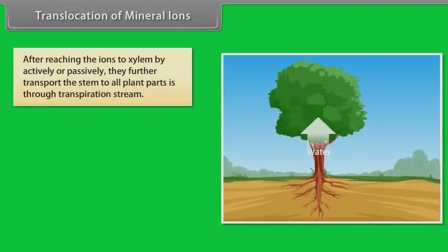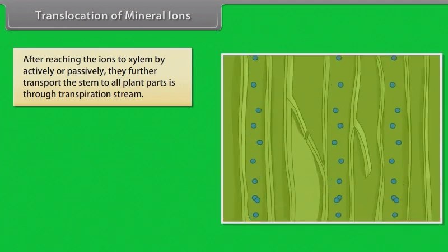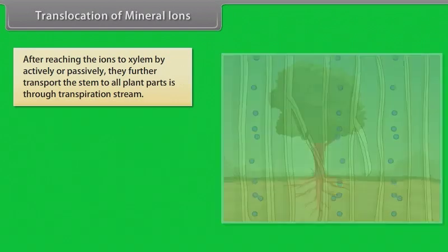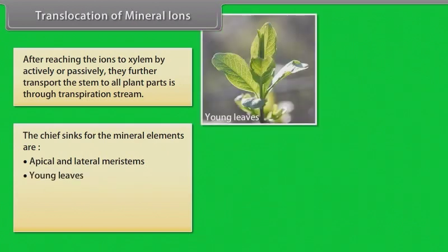After the ions have reached the xylem through active or passive uptake, or a combination of the two, their further transport up the stem to all parts of the plant is through the transpiration stream. The chief sinks for the mineral elements are the growing regions of the plant, such as the apical and lateral meristems, young leaves, developing flowers,